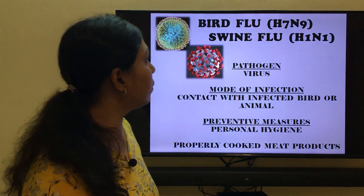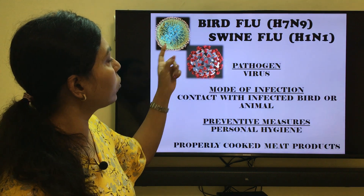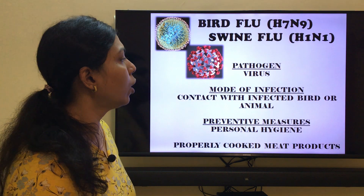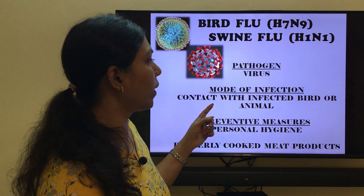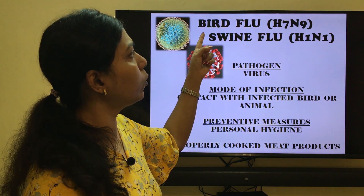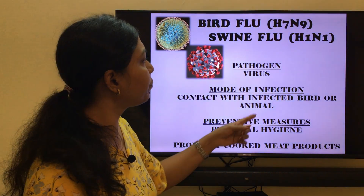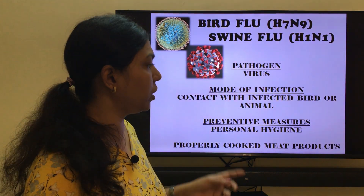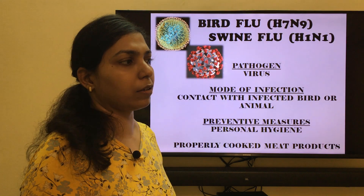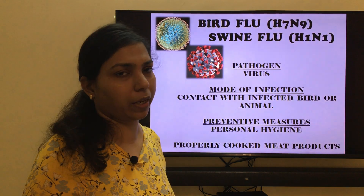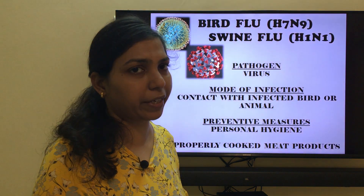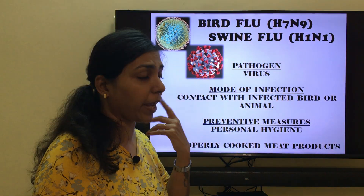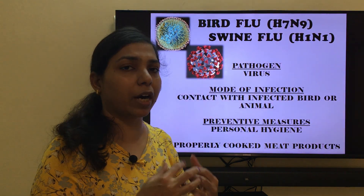Bird flu is also called H7N1/N9, and both bird flu and swine flu are spread through contact with an infected bird or animal. Bird flu typically affects birds like chickens, and swine flu affects animals like pigs. Preventive measures include maintaining personal hygiene — especially for people working in poultry or swine farming — and ensuring that meat products are properly cooked. You should never consume undercooked meat products.